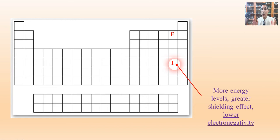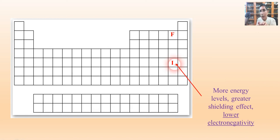That means iodine is going to have a lower electronegativity. Since those outermost electrons are shielded, they hover farther away from the nucleus, and that nucleus is so far from the outermost energy levels that it really can't attract a random electron floating around out there.